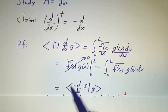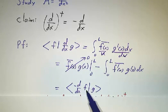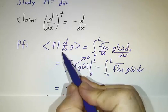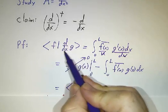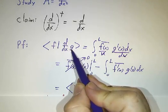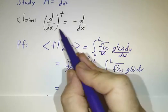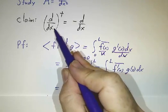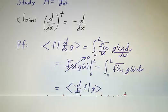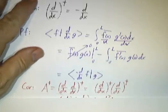The remaining term is exactly minus the inner product of the derivative of f with g. So minus a derivative applied to f has the same effect as a derivative applied to g, meaning the adjoint of the derivative is the minus derivative.